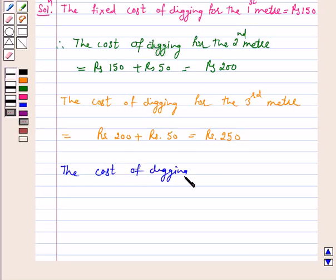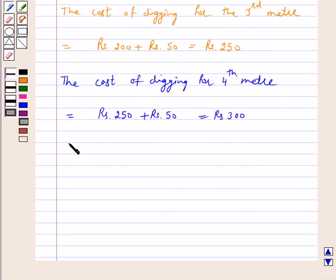Now the cost of digging for the fourth meter is equal to rupees 250 plus rupees 50 which is equal to rupees 300.